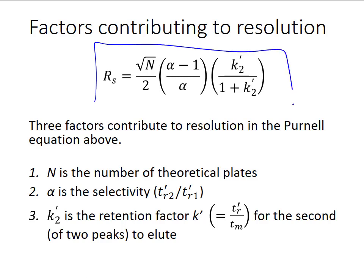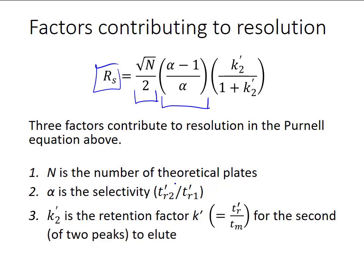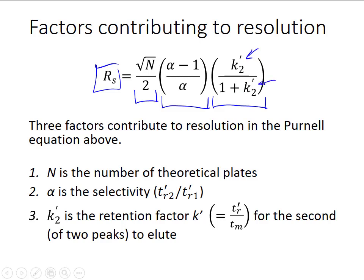Now let's look at factors contributing to resolution. The equation shown here is called the Purnell equation. In this equation, resolution Rs is given as the product of the square root of the number of theoretical plates divided by 2, times the selectivity minus 1 divided by the selectivity for two given peaks. Selectivity alpha is defined as the adjusted retention time of one peak divided by the adjusted retention time of another peak, multiplied by the retention factor of the second of two peaks to elute divided by 1 plus that retention factor. The retention factor is defined by the adjusted retention time for that second peak divided by the dead time for the experiment.